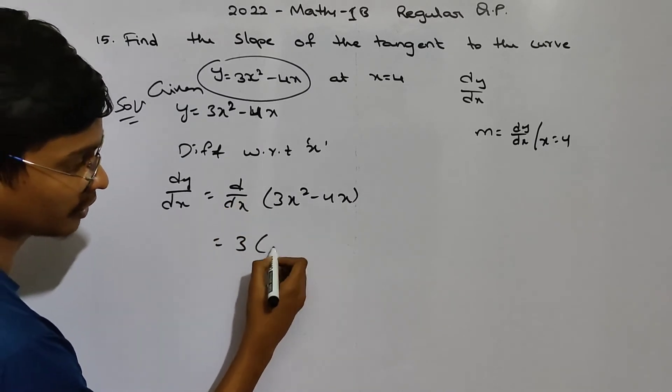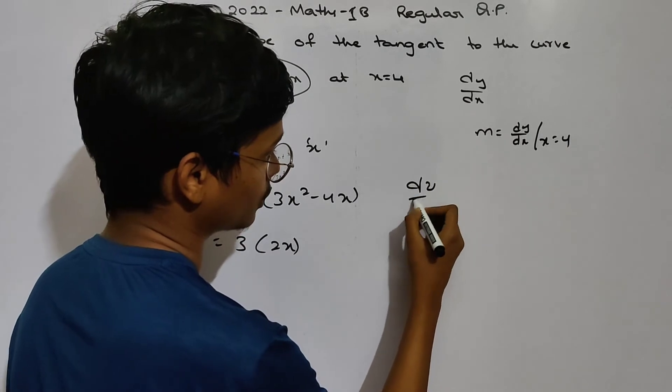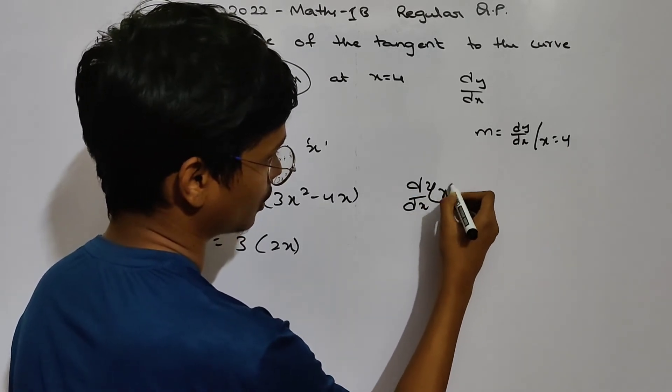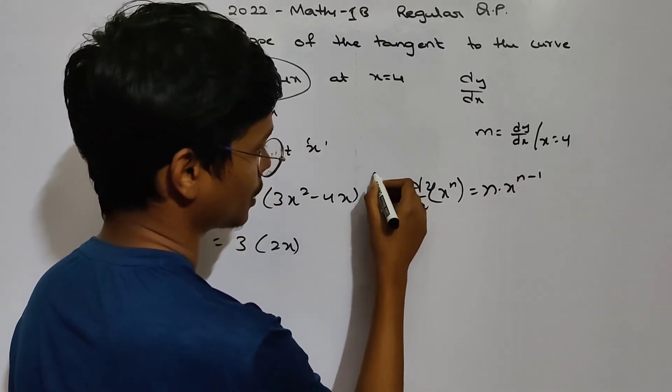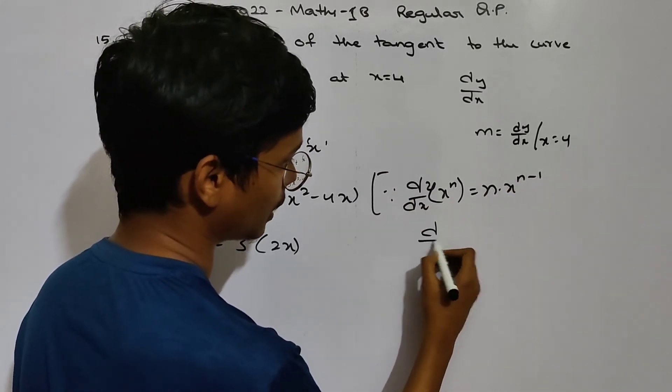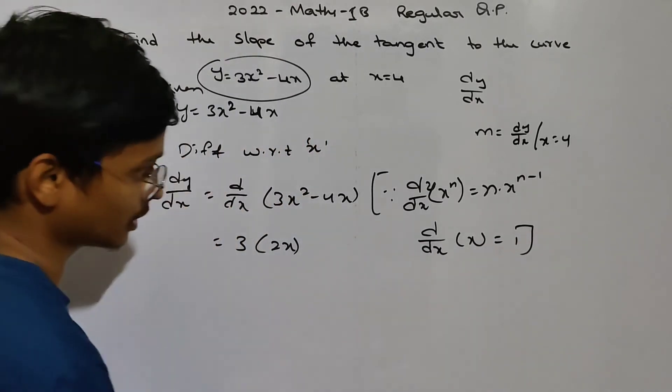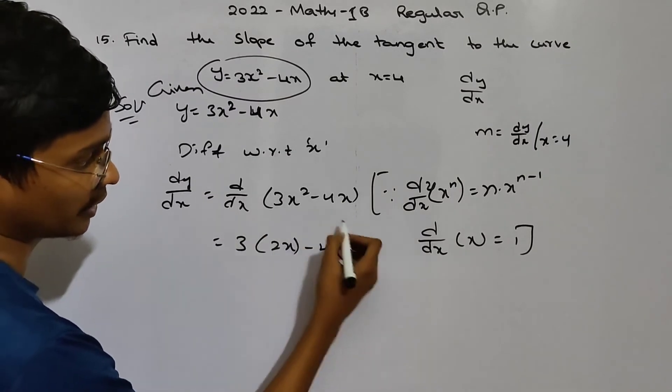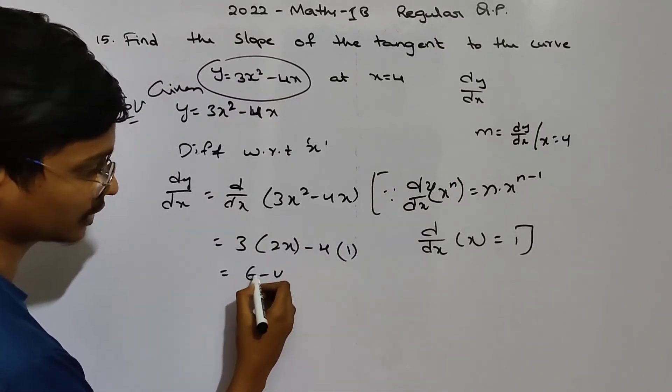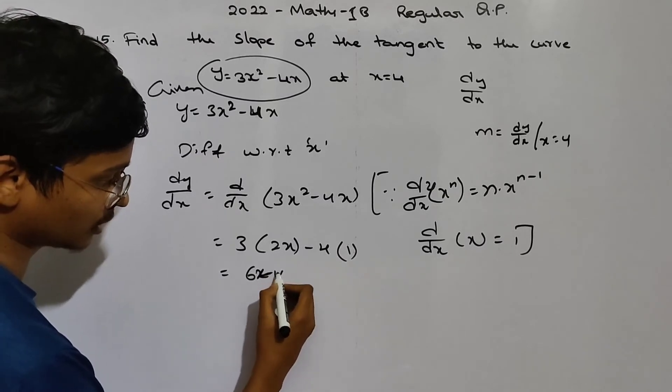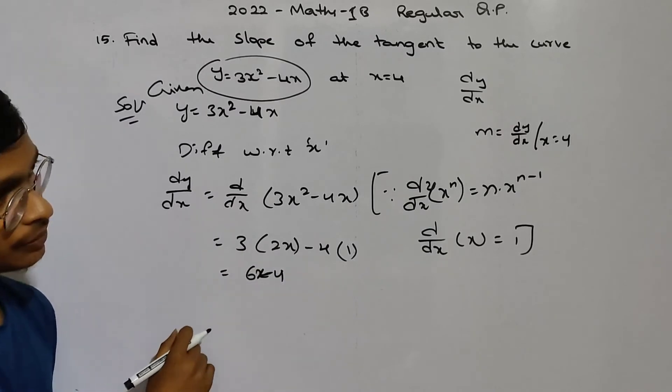3 by dy by dx of x square nth of 1 at 2x. And there is already dy by dx of x power n. That is n into x to the power of n minus 1. Since dy by dx of x that is 1. And there minus 4 by dy by dx of x nth of 1. 3 times 2 is 6 minus 6x minus 4. And that is 6x minus 4.